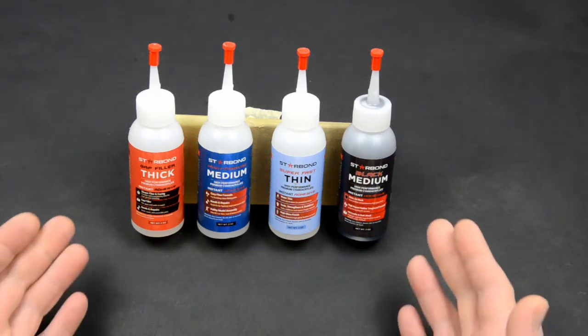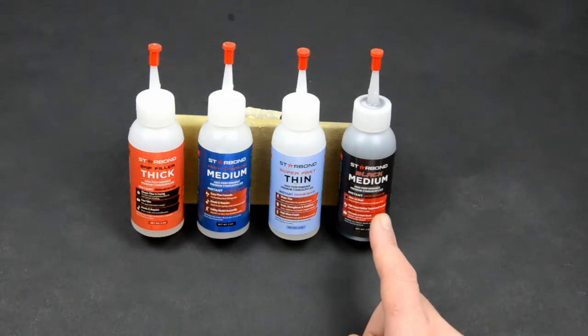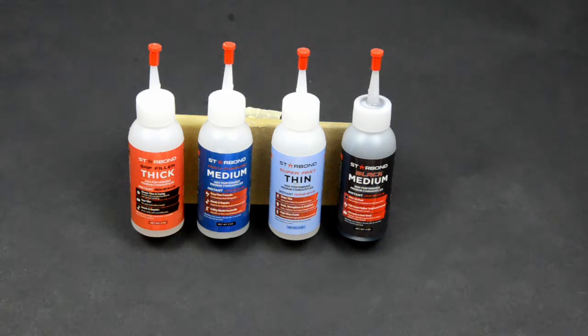So here we have them. It's not the whole range, but I think that those four are more than enough even for a very demanding user. We have thick, medium, thin, and black medium, which we will call black from now on. As you figured out, the names mostly refer to the viscosity of the glue.